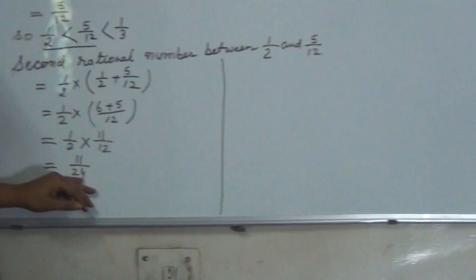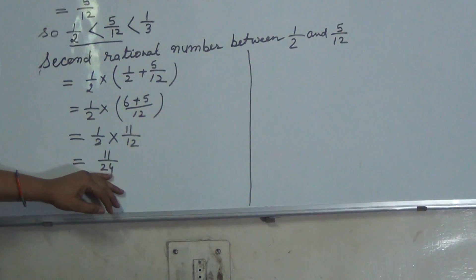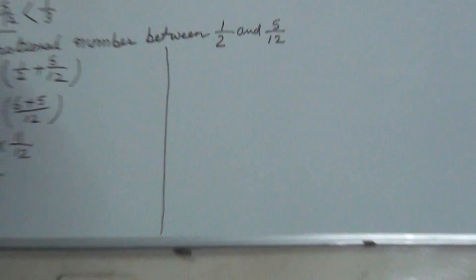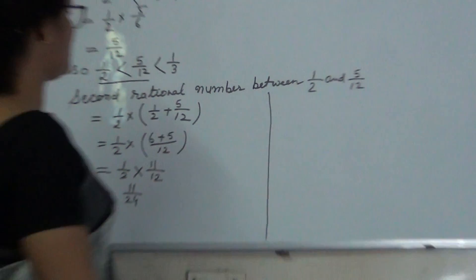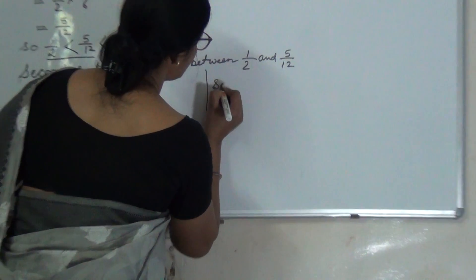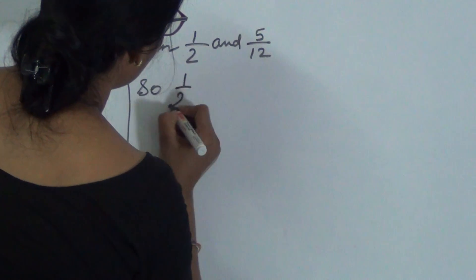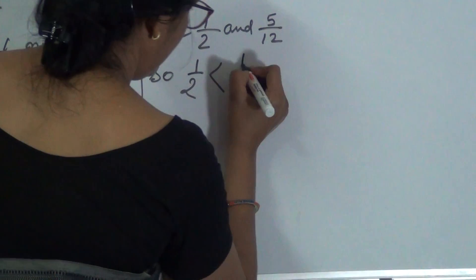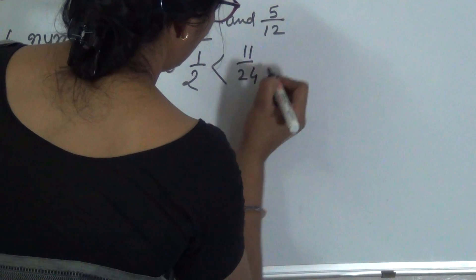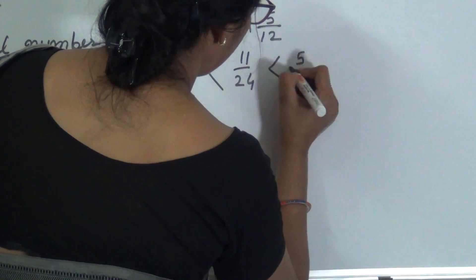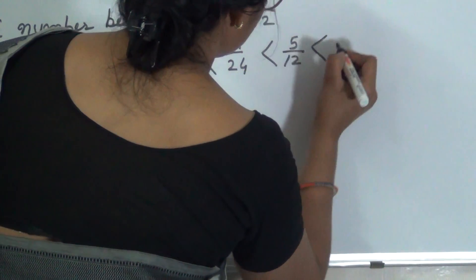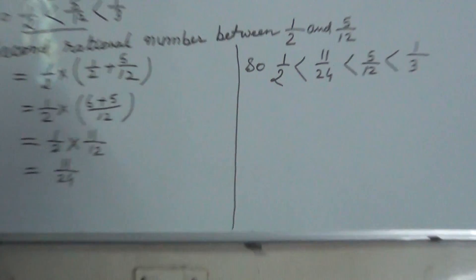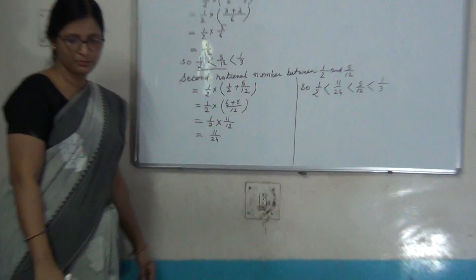Now, 11/24 lies in between 1/2 and 5/12. So this is the second rational number. We can write: 1/2 is less than 11/24, which is less than 5/12, which is less than 1/3. We have found 2 rational numbers.